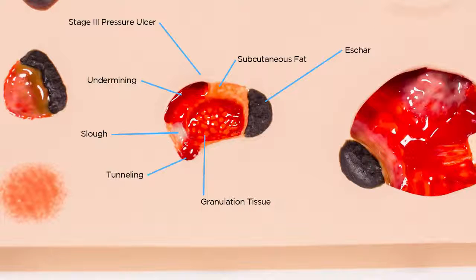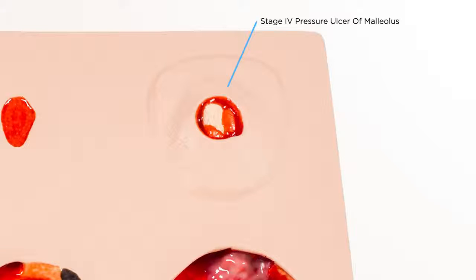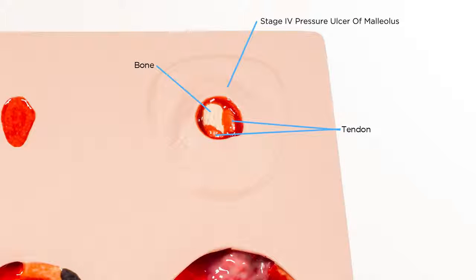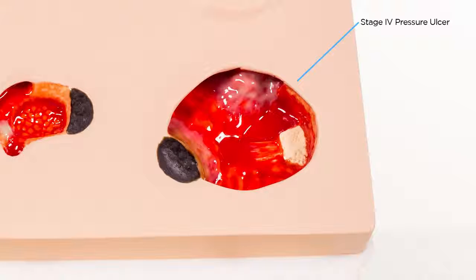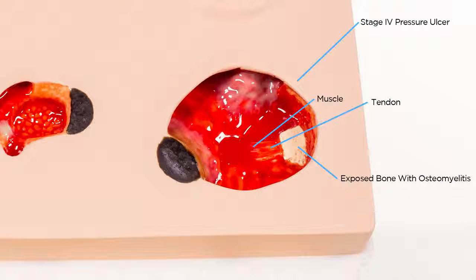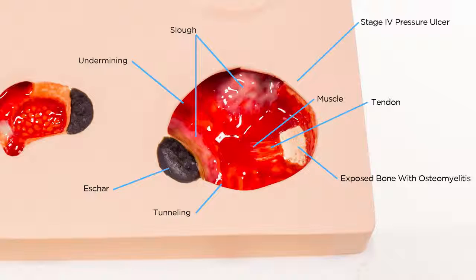This is followed by a shallow stage 4, representative of over the malleolus with bone and tendon visible. This wound shows that a stage 4 wound does not necessarily need to be deep or large in size. The final wound is a large stage 4 pressure ulcer displaying exposed bone with osteomyelitis, tendon, muscle, eschar, slough, undermining, and tunneling.